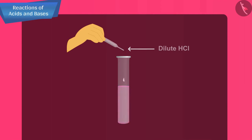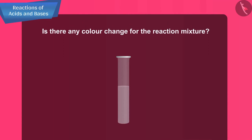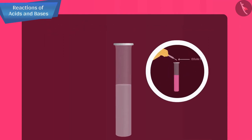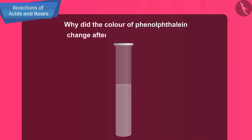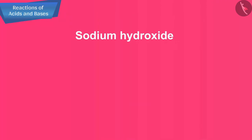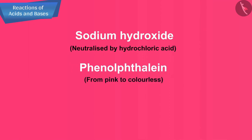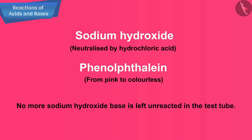After adding some amount of HCl drop by drop, the pink colour disappears and the solution becomes colourless. This is because, at this stage, the entire sodium hydroxide base in the test tube has been neutralized by hydrochloric acid. The colour of phenolphthalein changes from pink to colourless because no more sodium hydroxide base is left unreacted in the test tube.